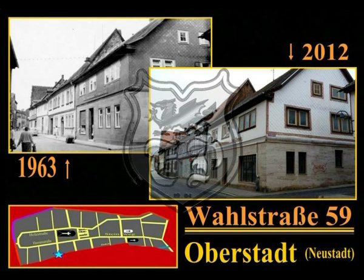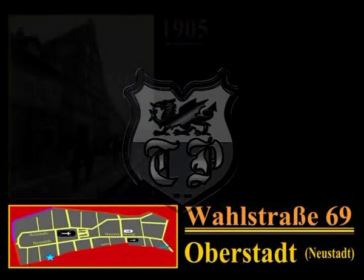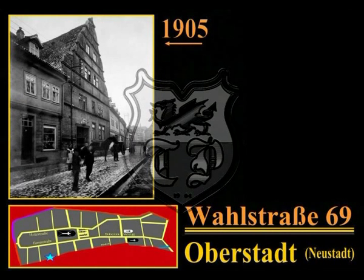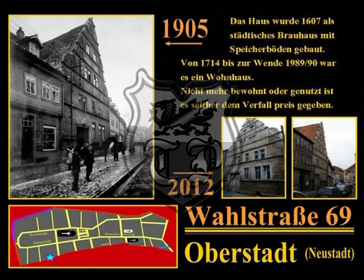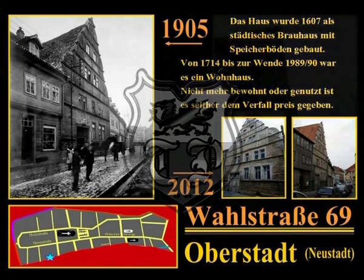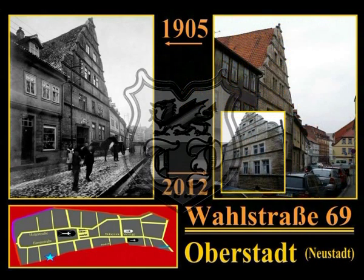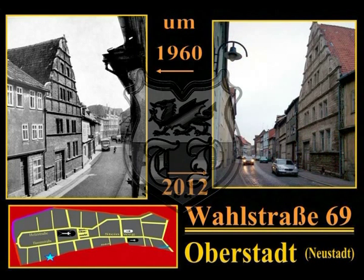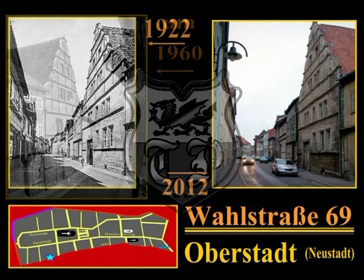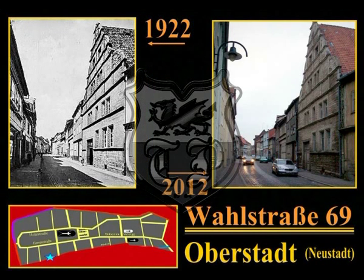Eine Aufnahme aus dem Jahre 1963 zeigt das ehemalige Fleischergeschäft in der Wahlstraße Ecke Marktgasse. Eines der früher schönsten und interessantesten Häuser der Stadt steht in der Wahlstraße 69; dieses Haus zeigt wie kein anderes den Einfluss der Hanse auf Mühlhausen. Es wurde 1607 als städtisches Brauhaus mit Speicherböden gebaut; von 1714 bis zur Wende 1989–90 war es ein Wohnhaus. Aufnahmen aus dem Jahre 1922 und aus den 1960er Jahren zeigen das Gebäude schon als Wohnhaus. Seit 1990 nicht mehr bewohnt, ist es wie viele andere historische Gebäude in der Stadt heute dem Verfall preisgegeben.